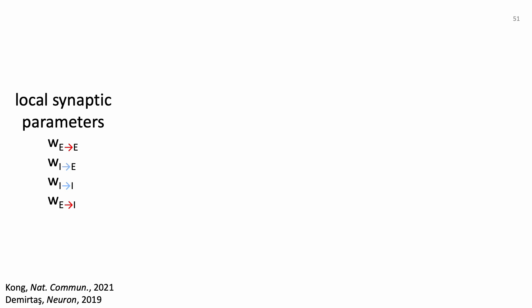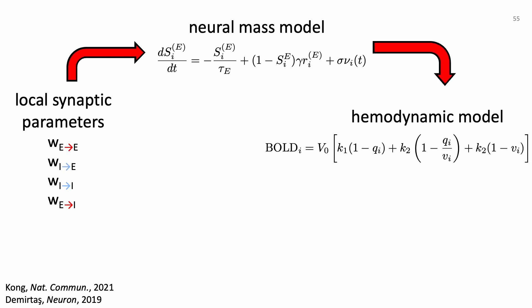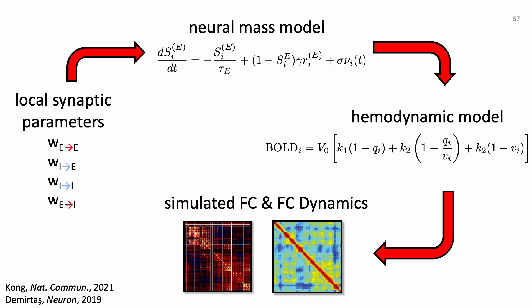To train the neural mass model, we initialize local synaptic parameters, then run forward simulation to generate simulated time courses of excitatory synaptic gating variables. These are fed to the hemodynamic model to produce simulated fMRI BOLD signals. We compute functional connectivity and functional connectivity dynamics from the simulated signals and compare them with empirical counterparts. A cost function measures their similarity and is used to iteratively update model parameters until optimized, after which we generate the EI ratio estimate.